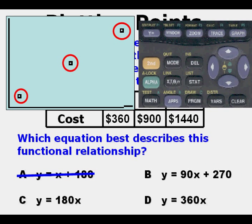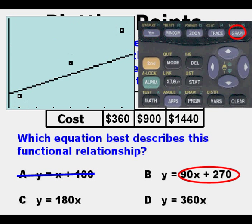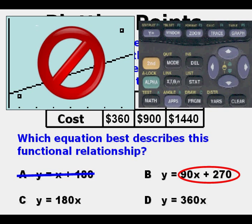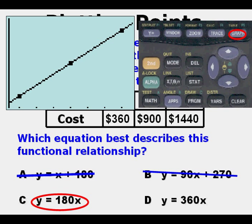Now we're going to go to choice B. We press in 90x + 270, we graph it, and we do see the line this time, but the line does not touch any three points, and so that is a wrong answer. We cross that out. Now we're going to proceed to choice C by entering 180x. After we do that, we graph and we see that the line does hit all three points, and so that shows this is our right answer.